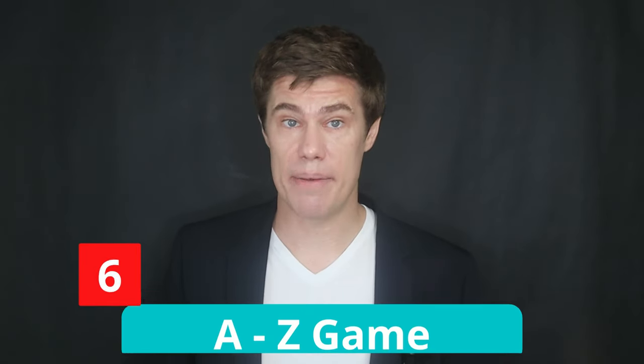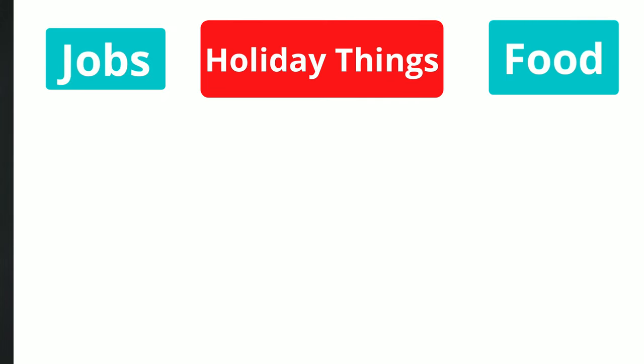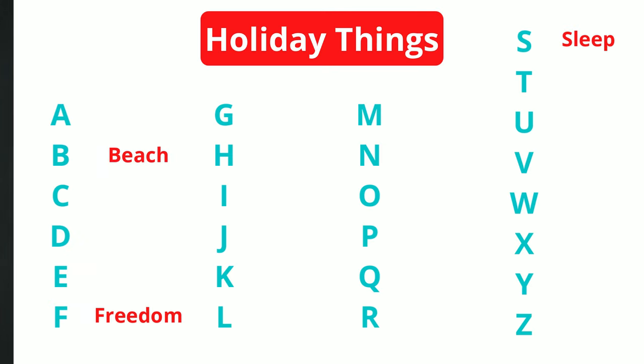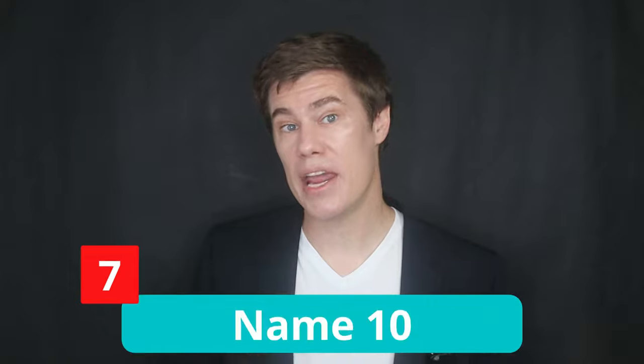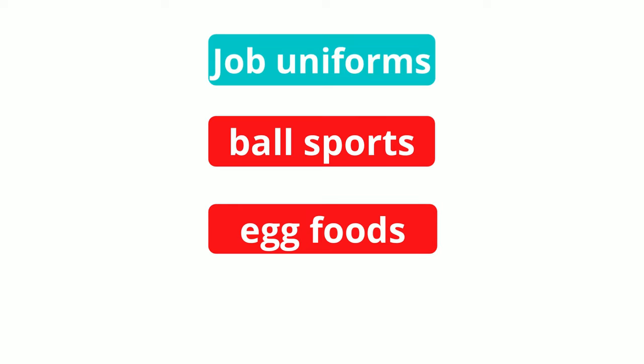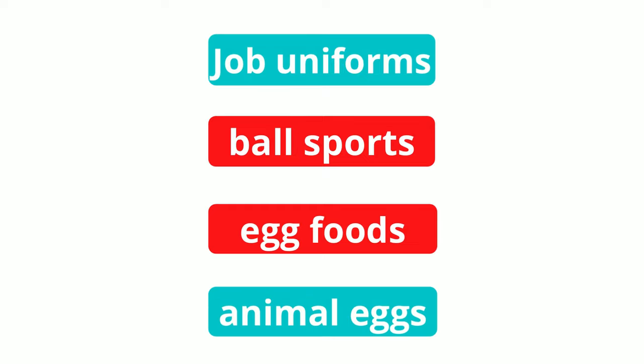A to Z game. Give students a theme — jobs, things you take on holiday, food — and write the letters A to Z on the board. The student must race to write an appropriate word next to each letter of the alphabet. Name ten: have students think of ten items that fit particular criteria, such as jobs where you have to wear a uniform, sports that are played with a ball, foods that contain egg, or animals that lay eggs.